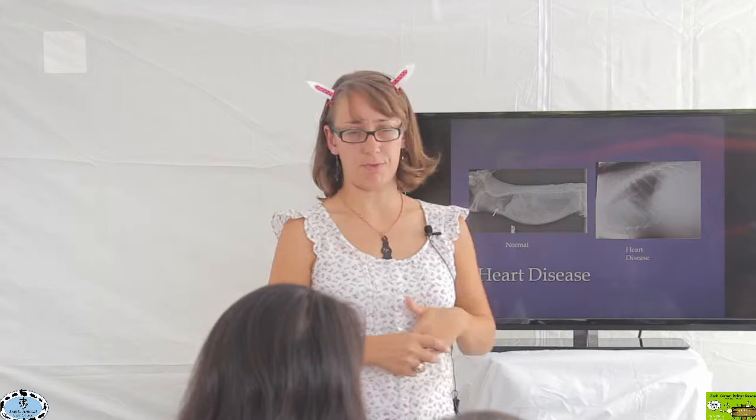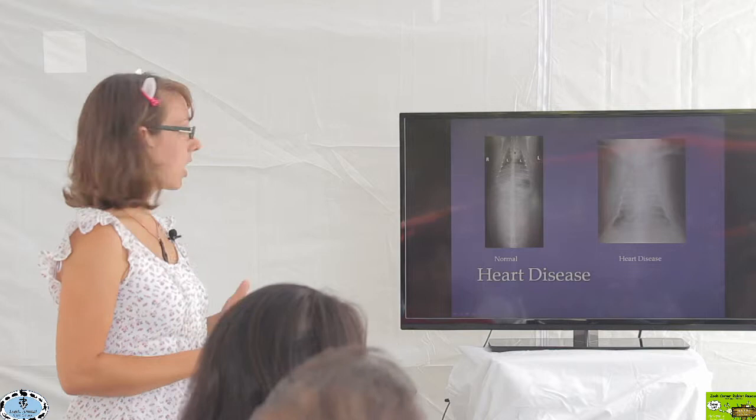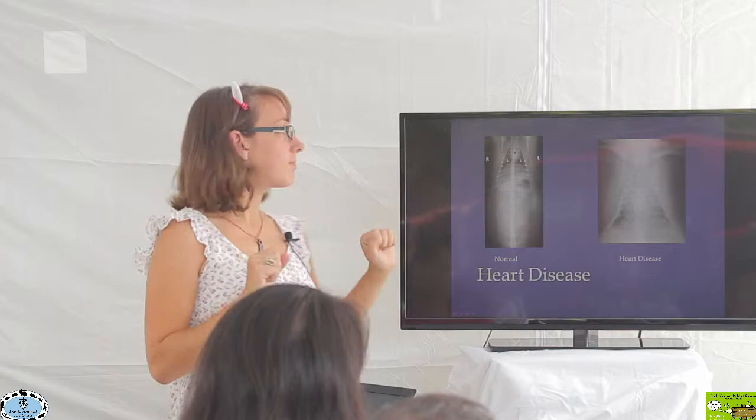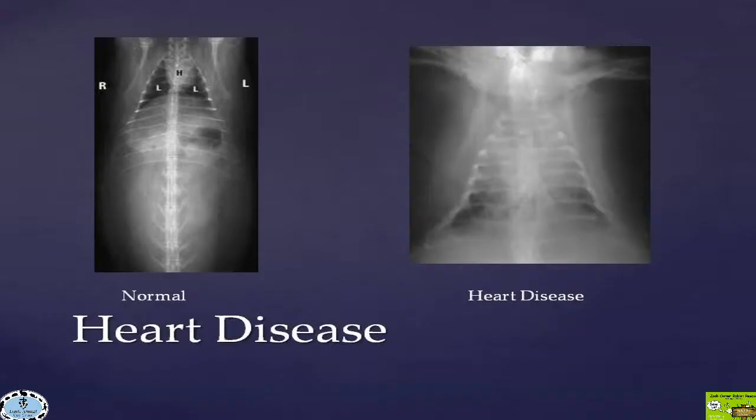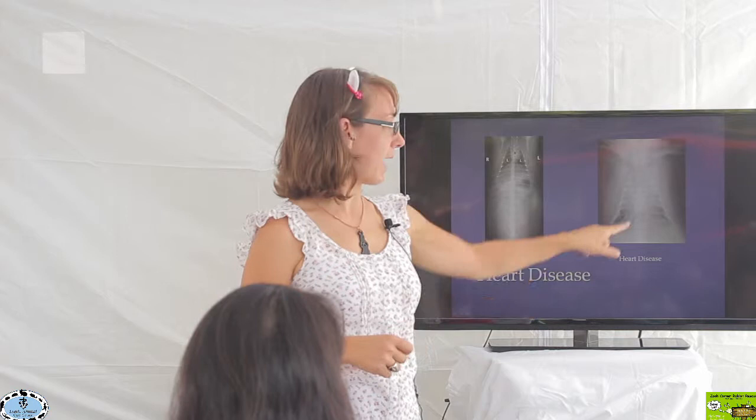A couple more pictures of heart disease. These are a little bit more dramatic. This is a rabbit that's lying on its back, so its legs are up and we have our chest up here. Here's our heart and here's our lungs lying on either side of that heart. In this x-ray here, our heart is up here. It's really hard to see the margins of the heart because our heart probably is a little bit larger. We have fluid accumulating around it, and you really cannot see much black in those lungs at all. So that's a much more serious case there.